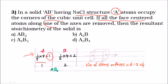Now if all the face-centered atoms along one of the axes are removed — this is a very important point — if we take the face-centered atoms, totally there are six. But if we remove atoms along one axis, that axis has two face-centered atoms on it. So we remove two atoms only.